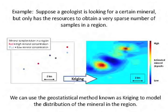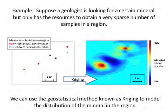I'll give you a little example here, right from the mining industry. Suppose a geologist is looking for a certain mineral in an area — say, a hundred square kilometer area — but they only have the resources to obtain a very sparse number of samples in this region. Typically in geology and mining, taking samples is very expensive and resource intensive. Here you can see on the left perhaps the samples that were taken in the area, with red colors indicating a high concentration of the mineral and blue indicating a low concentration. We only have the resources to drill six sample locations.